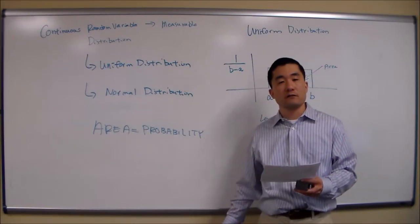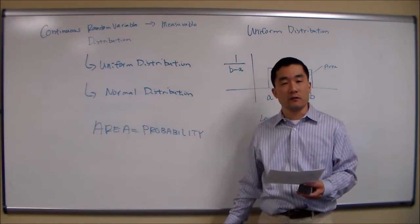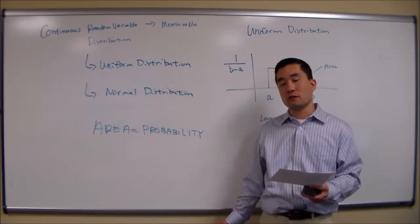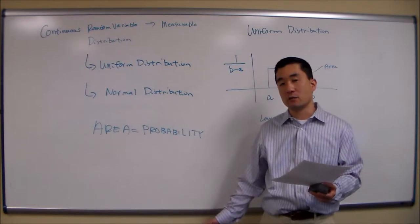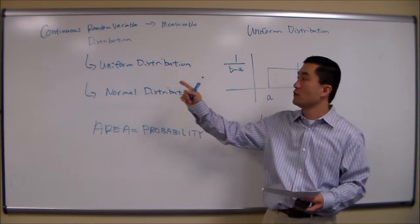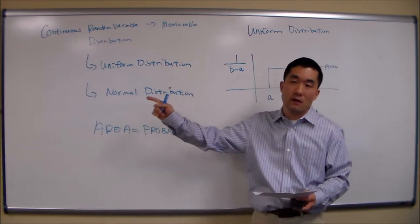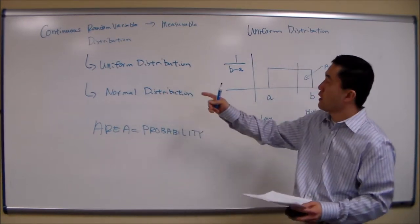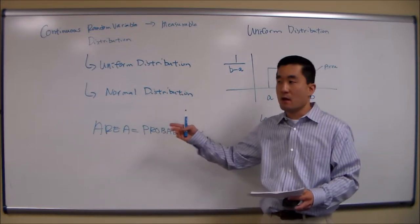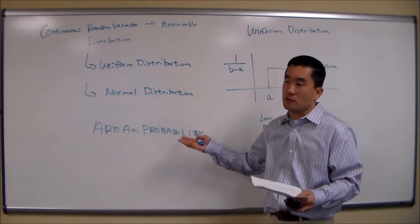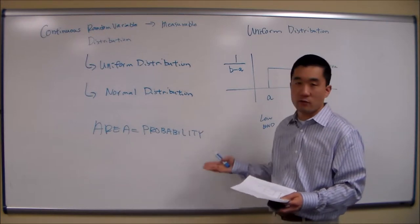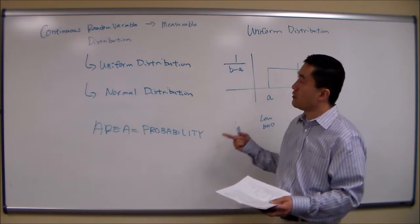In the last video, you learned about the discrete random variable and discrete distribution. What's unique about the discrete random variable is that it's countable. In this video, I'll talk about the continuous random variable and the continuous distribution. What's different about the continuous random variable is that it's measurable — for example, amount of rainfall, amount of milk you can extract from a cow. If something is measurable, it's considered to be a continuous random variable.